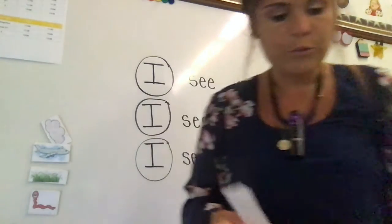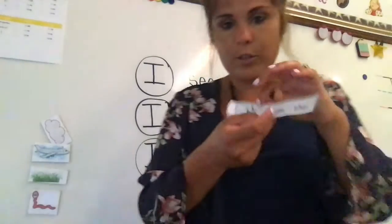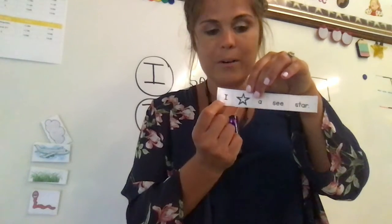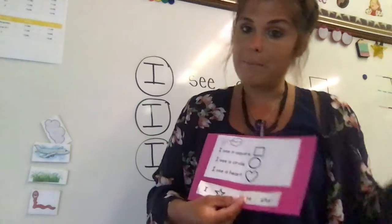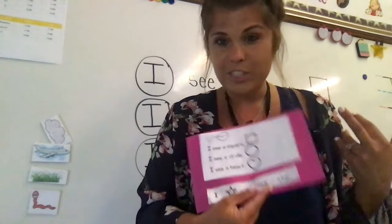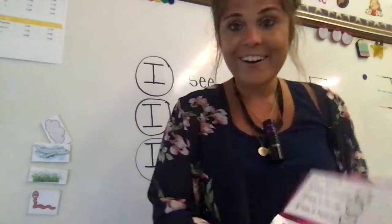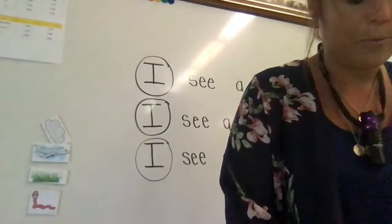Alright, once you finish that, you can also find and circle sight word I down here and then this can go back in your binder so that Miss Munn and Mrs. Palmer and Miss P can all see your work at the end of the week.